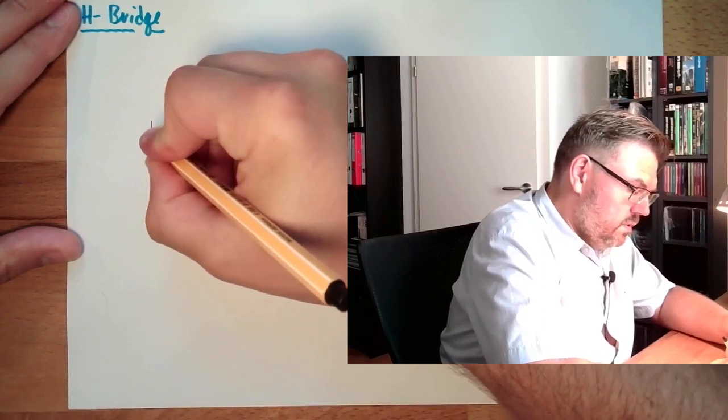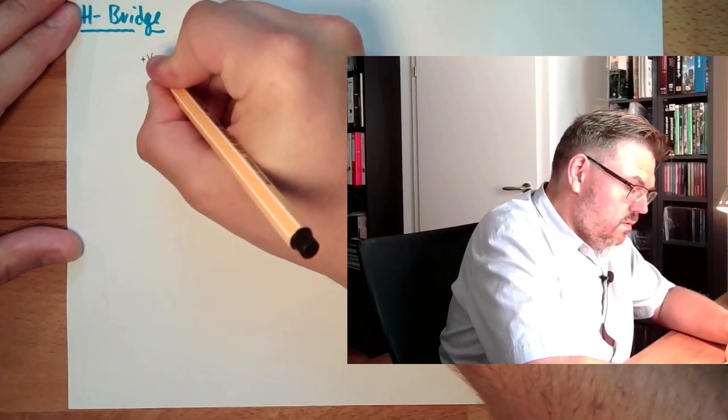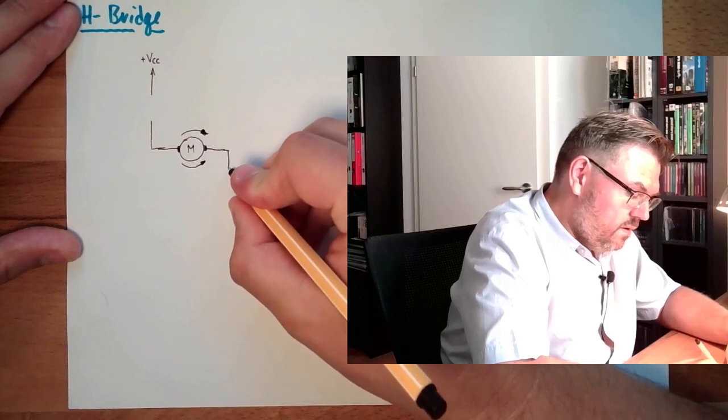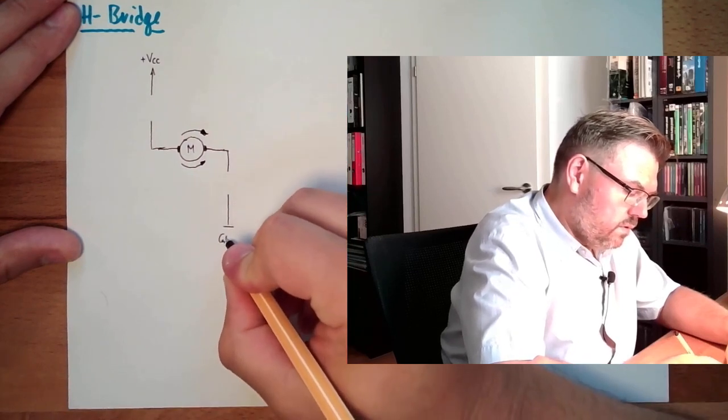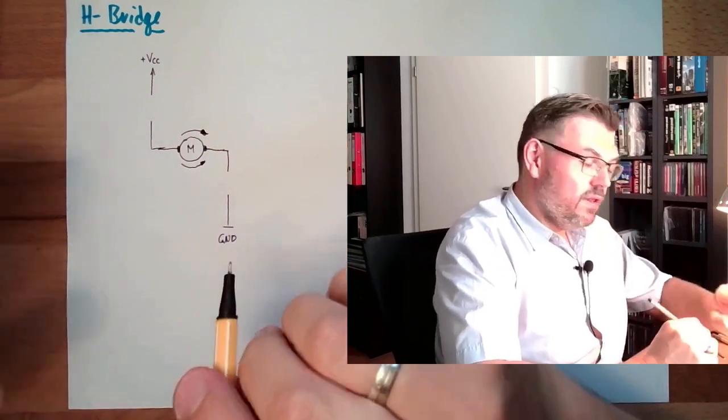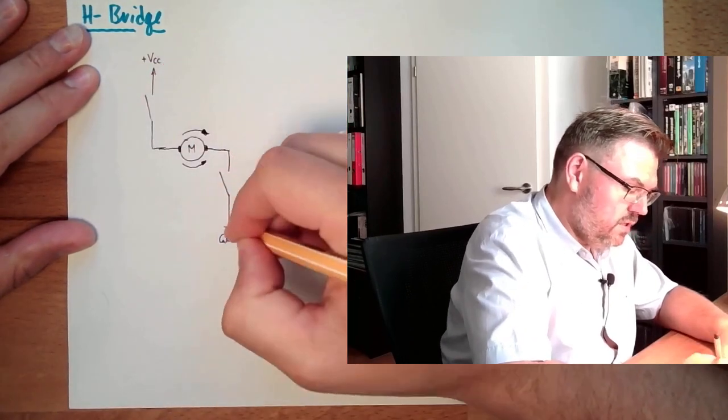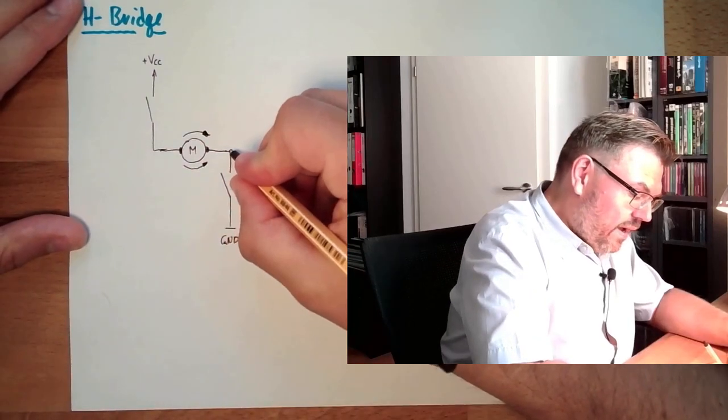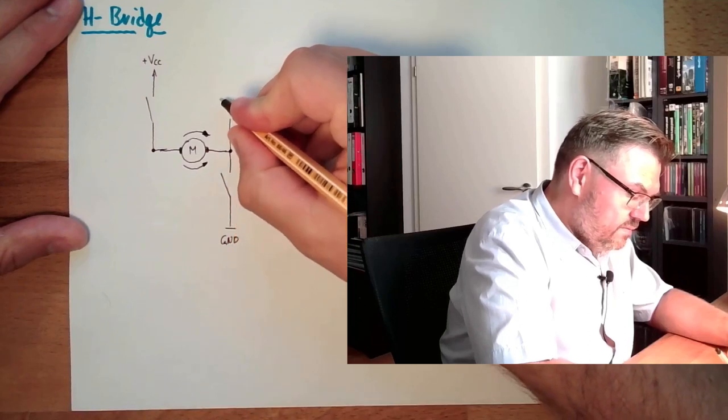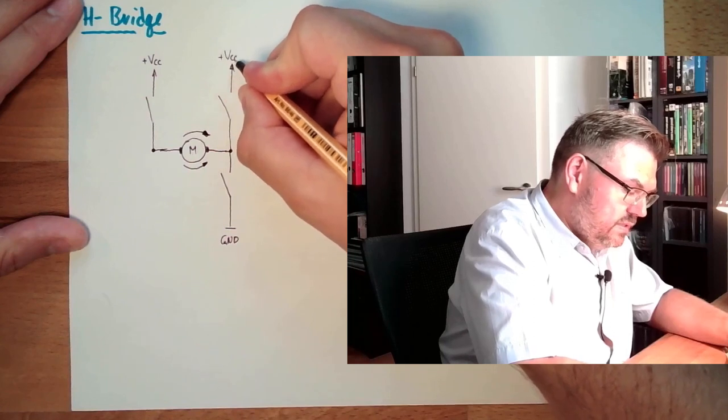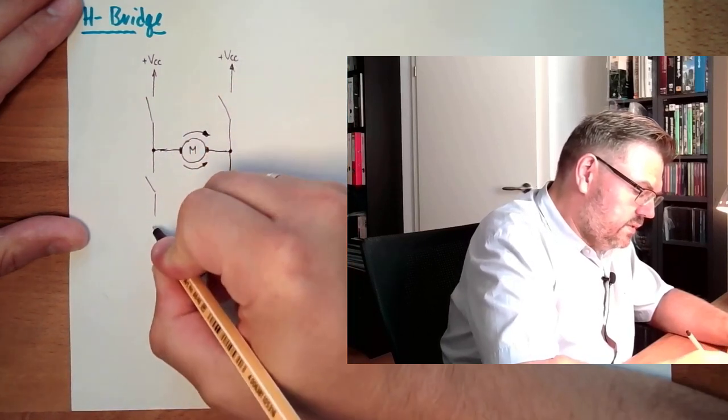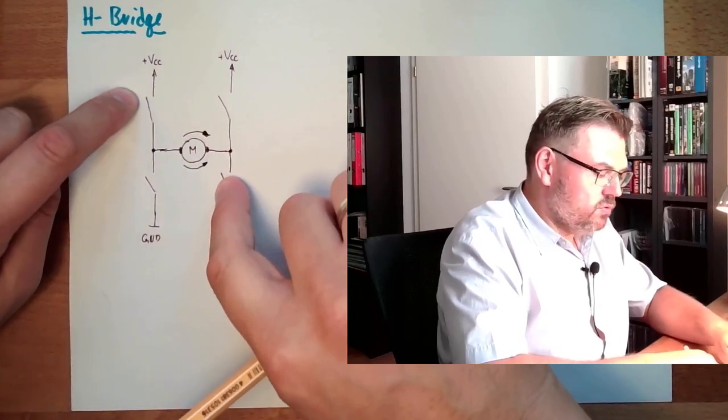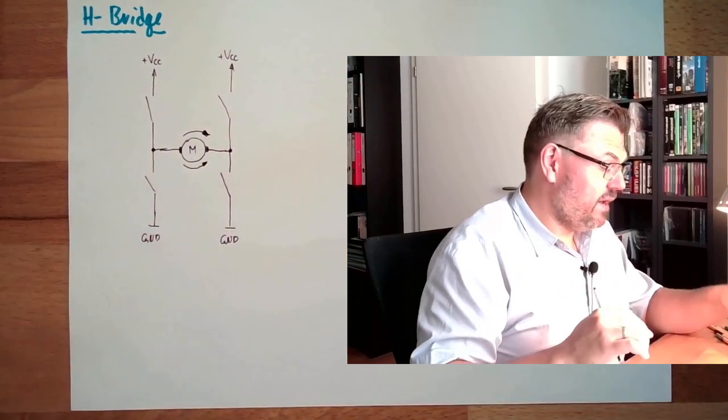We have somewhere here a power supply of the motor. And we have somewhere here ground, all right? Now, if I do it like that, that I make here a switch and here a switch, and I close both switches, the motor turns in one direction. And I can do exactly the same, plus VCC in the other direction, the other side. If I close those two, the voltage is this way. If I open those two, there is no voltage. If I close those two, the voltage is this way, it will turn in the other direction.